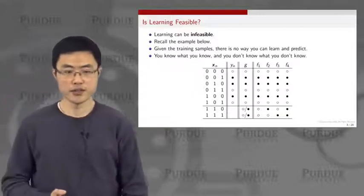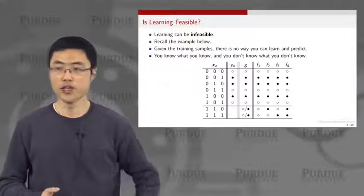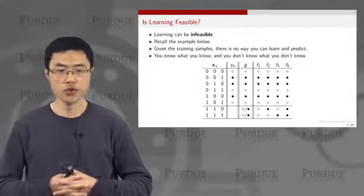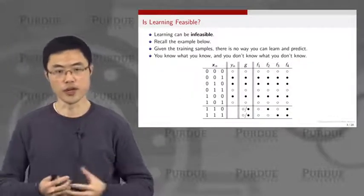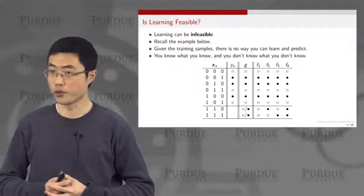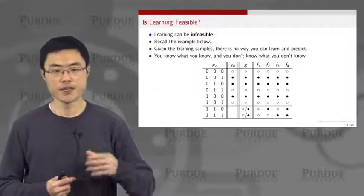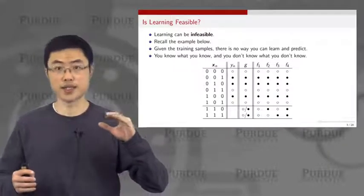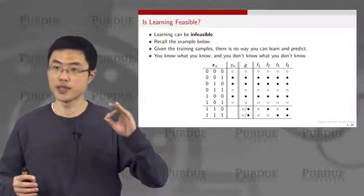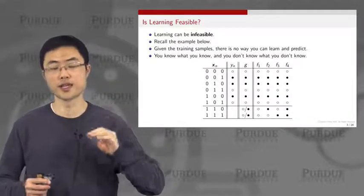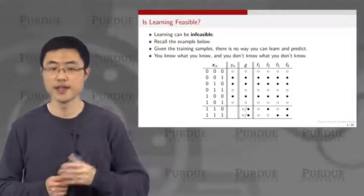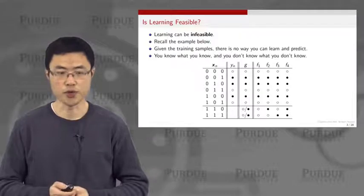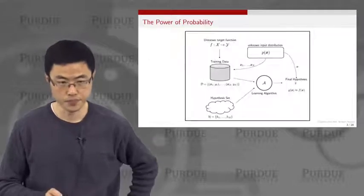The bottom line message here is that learning is not always feasible. You only know what you know, and you don't know what you don't know. In other words, if there is no correlation between the training data set and the testing data set, there is no way to learn and predict what will happen next.